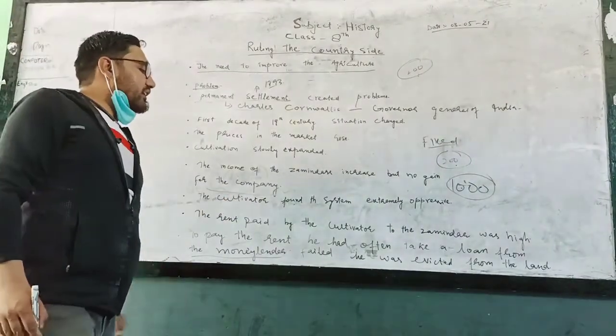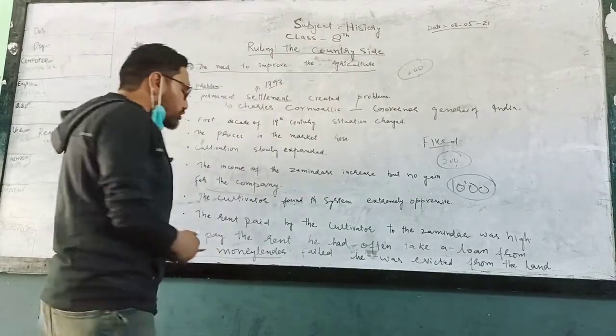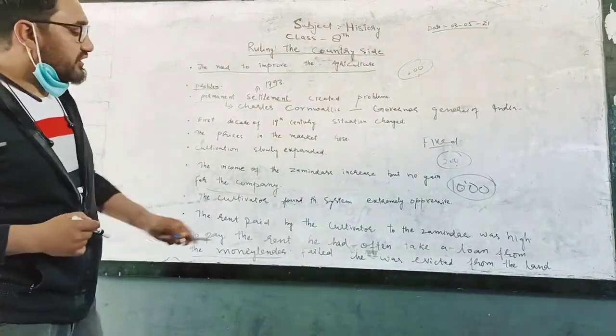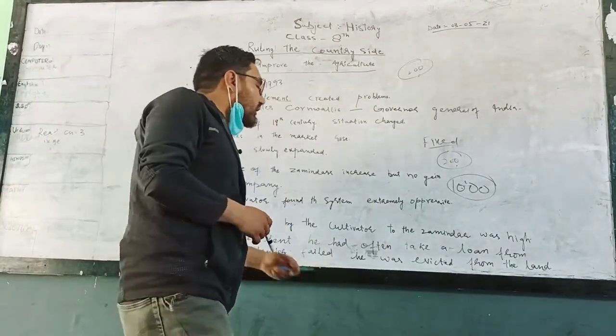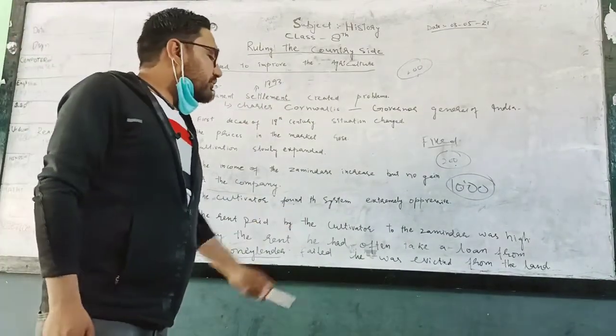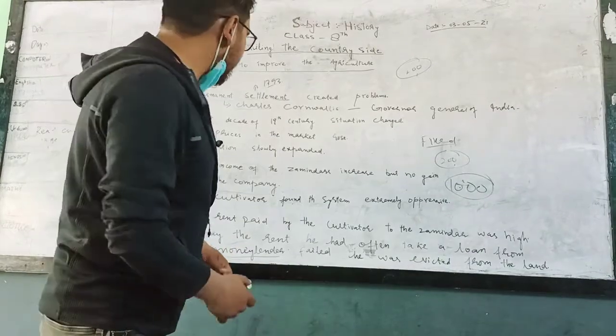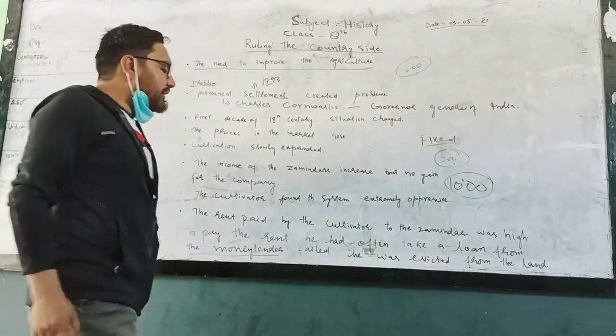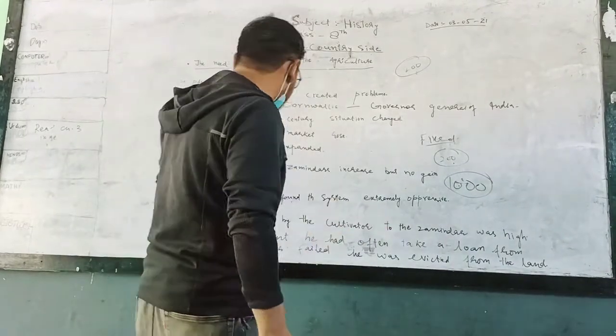The rent paid by the cultivator to the zamindar was high. To pay the rent, he had often taken a loan from the moneylender.